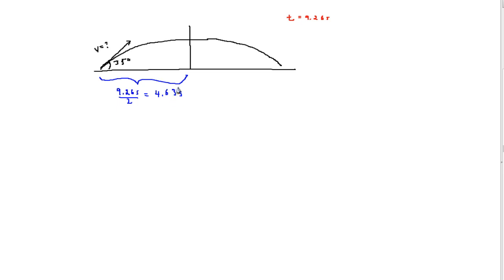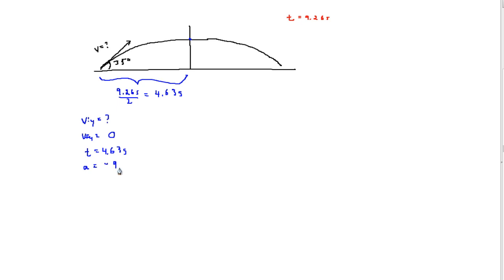We need to determine the vertical velocity — the y-component of this projectile. The initial y-velocity is what we're trying to determine. At the top of the arc of the projectile, the final velocity in y will be equal to 0 meters per second. We know the time is 4.63 seconds, and acceleration due to gravity is negative 9.81 meters per second squared, since it acts in the downward direction.